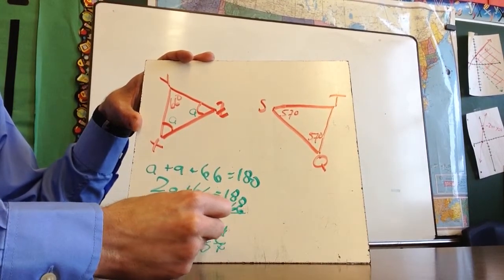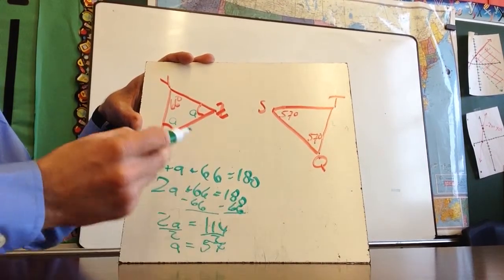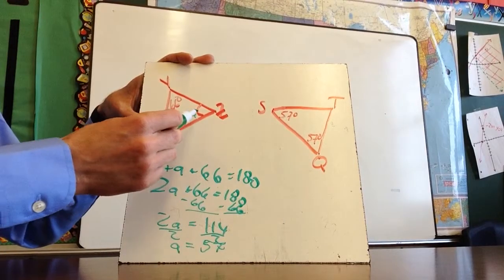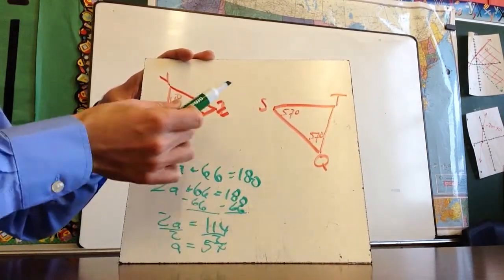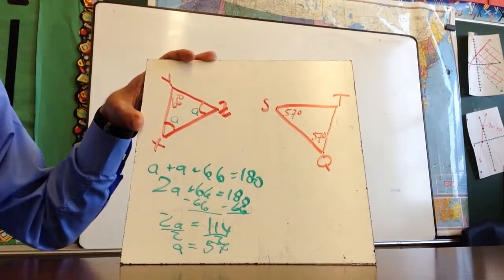So that's one way I could prove it. Both base angles are 57 degrees, making these two triangles similar.